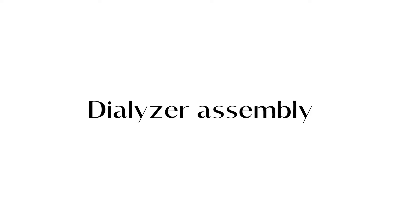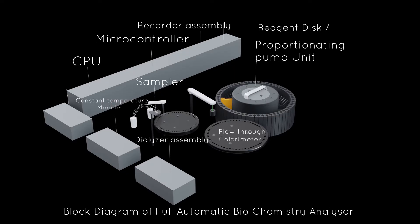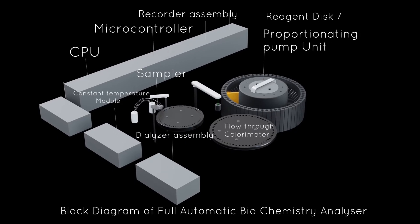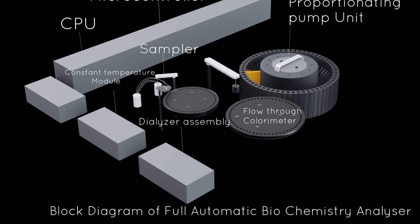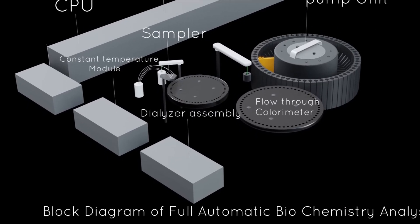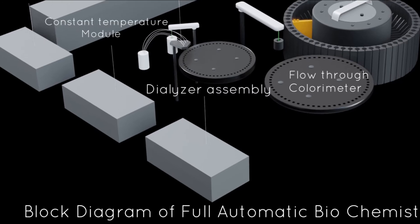The next component is the dialyzer assembly. This module achieves the separation of small and large molecules by allowing the former to pass through a semi-permeable membrane from the donor or sample stream of liquid and air bubbles to a recipient stream of liquid again segmented by air bubbles.